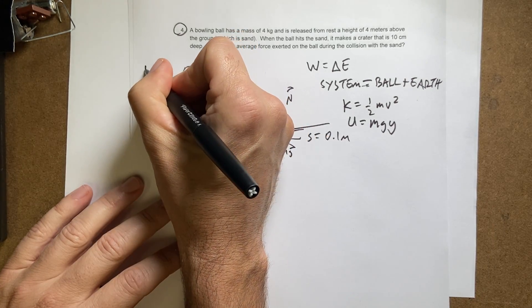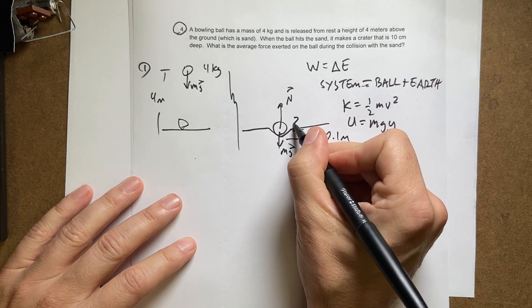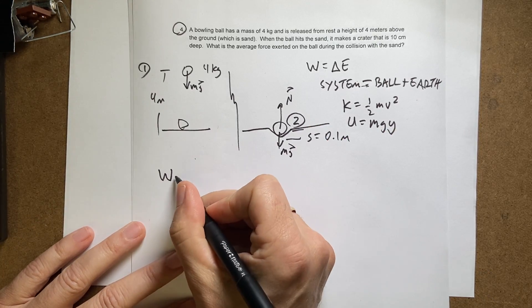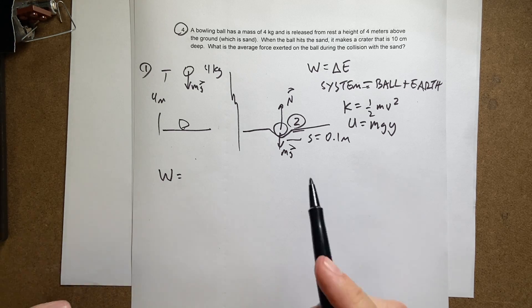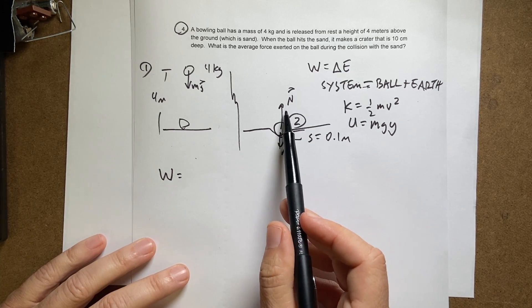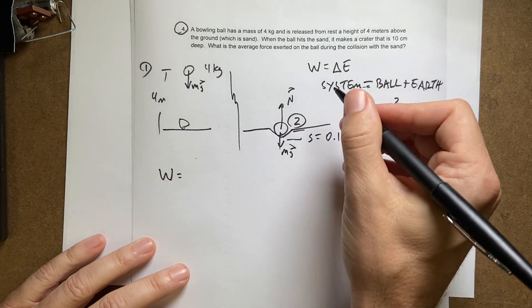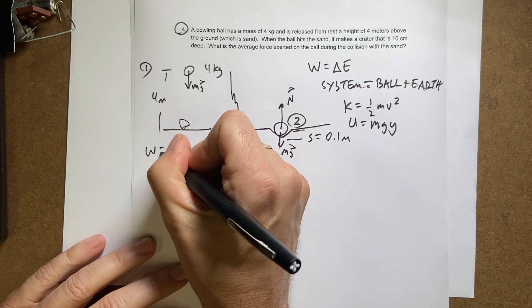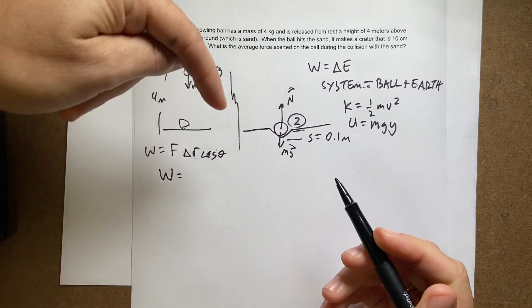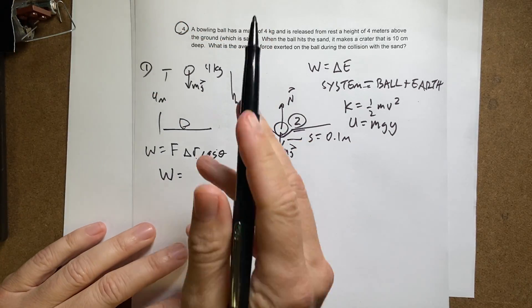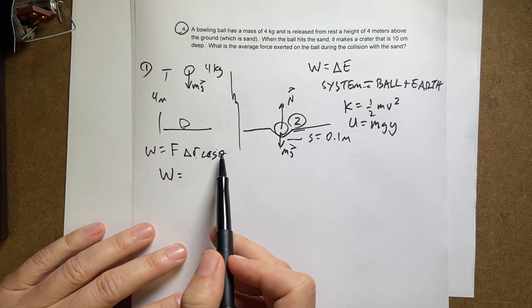So if I pick this as my start and this is my end, I can say the work done. What forces would do work? Well, the only force that can do work is this normal force. So work is F delta R cosine theta. So if it's moving this way but pushing that way, theta is going to be 180 degrees. So cosine of 180 is negative one.